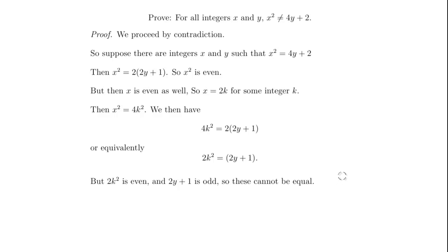So what have we done here? We assumed the thing we're trying to show is false. That there are integers x and y such that x squared is equal to 4y plus 2. We did a little math and we arrived at an equation one side of which was even and the other side was odd.